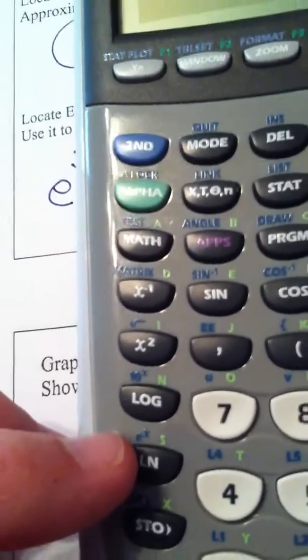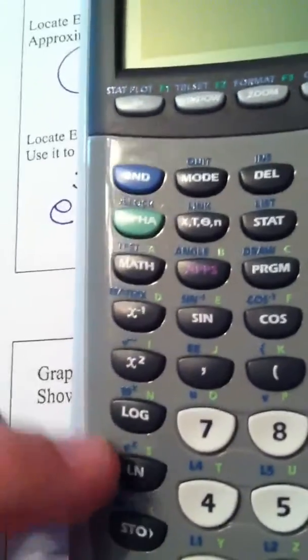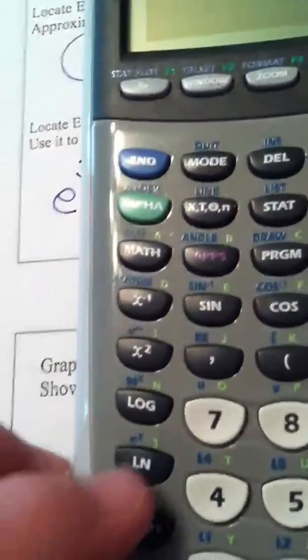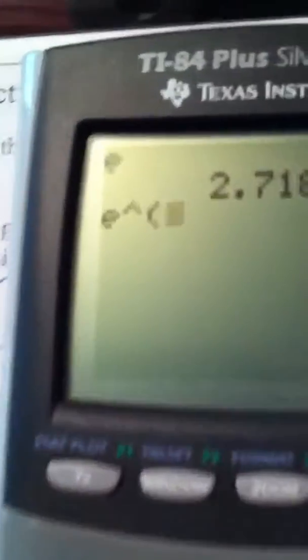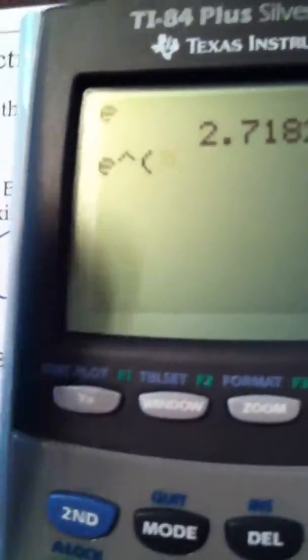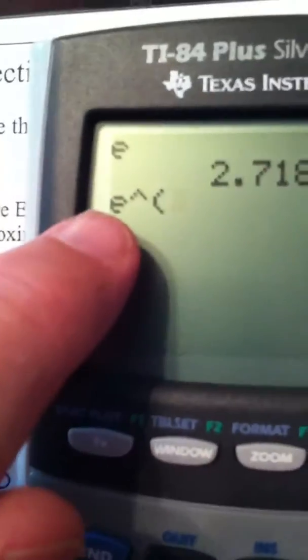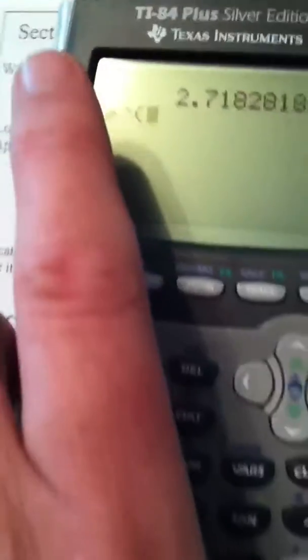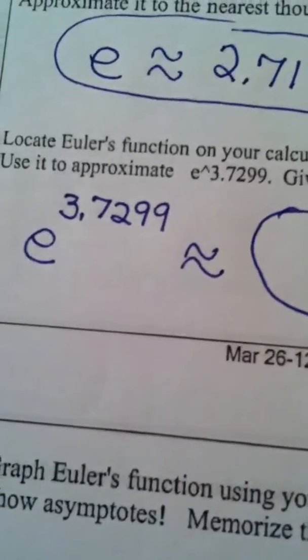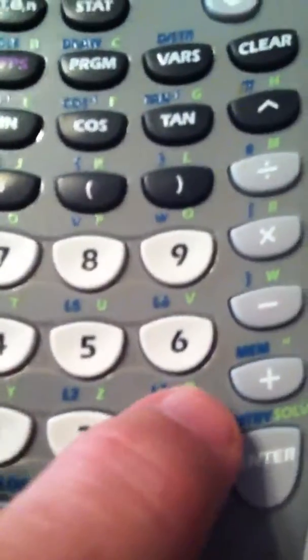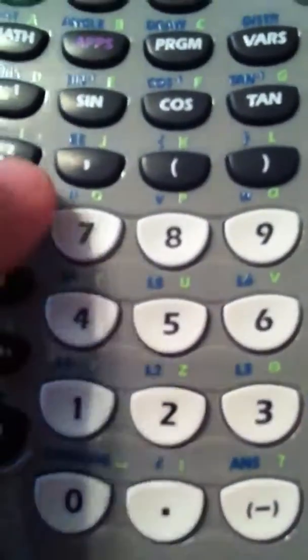So, to get to Euler's function, we hit second function ln. And notice on the graphing calculator that has brought up e carat and it's raising it to a power. That's what the carat means. And the power we were asked to put in was 3.7299.